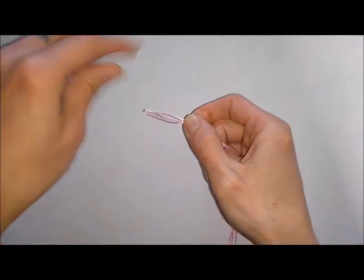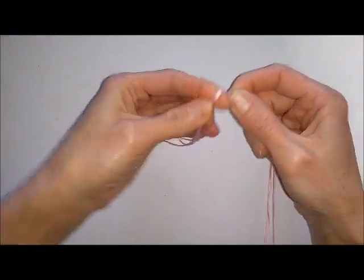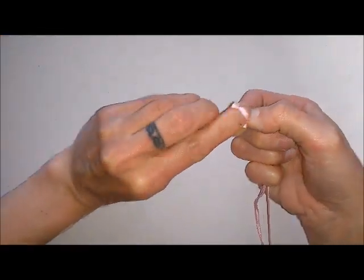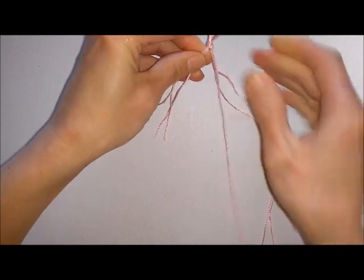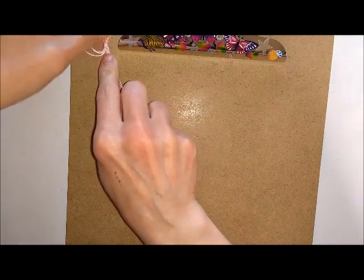To get started, match up your ends and pull out a long enough piece so you can make a tie on the end. Then tie a temporary knot and take your board and clip this knotted end to the top of your board.